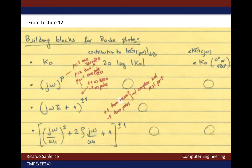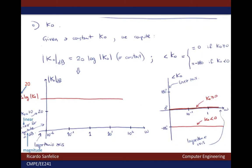The phase is essentially the angle of the real number: when it's positive it will be 0, and when it's negative it is 180 degrees. So when we plot that particular building block, the constant, all we get is a line as a function of angular frequency. This is the magnitude plot on the left for the gain — the constant is just 20 log of k0. Here I am computing this for k0 equal to 10, which yields the particular value of k0 in dB that you see right there.